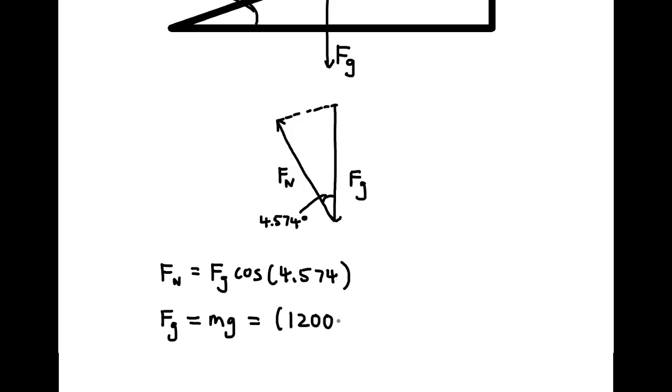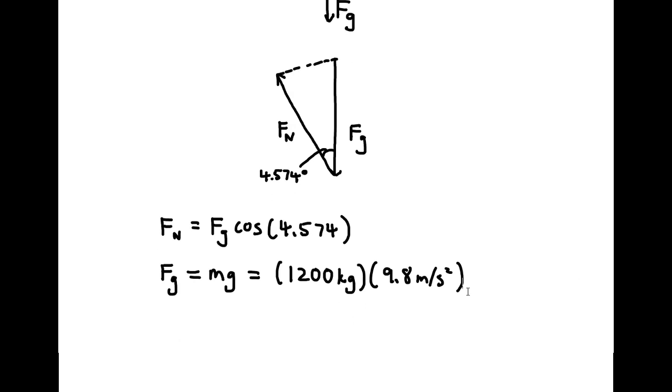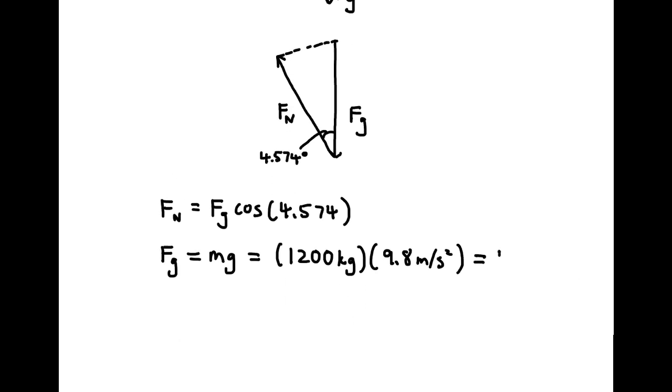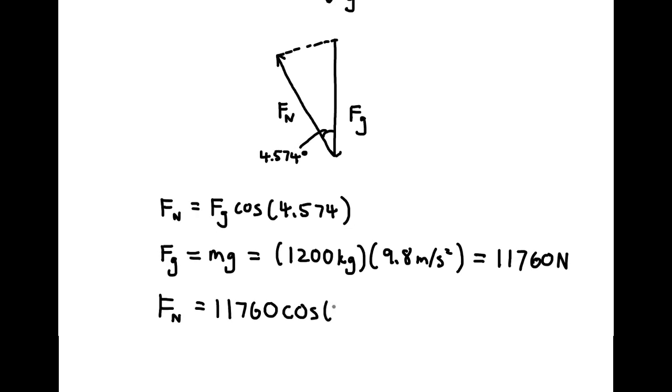We know the mass of the car, so we multiply the mass of the car by 9.8 meters per second squared to get FG. Using cosine, we can find FN by multiplying FG by cosine of the angle, which is 4.574 degrees.